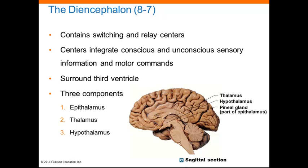The left and right thalamus are separated by the third ventricle. This is the final relay point for sensory information. Only a small part of this input is actually sent on to the primary sensory cortex, so the thalamus is responsible for weeding out a lot of that information.